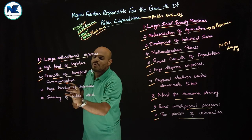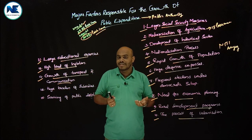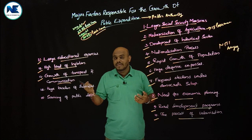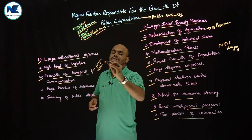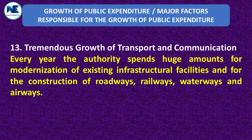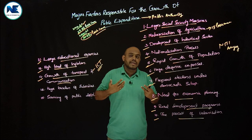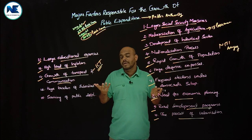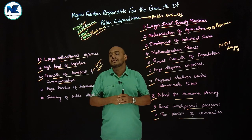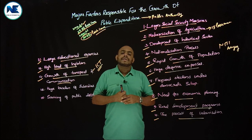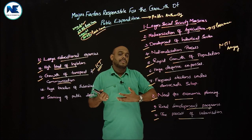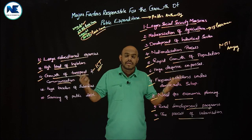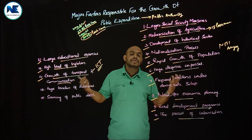The thirteenth point is the growth of transport and communication. This includes railways, road networks, airports, and ports. We are also spending lots of funds on ICT — Information and Communication Technology. The growth of transport and communication is also a factor responsible for the growth of public expenditure.